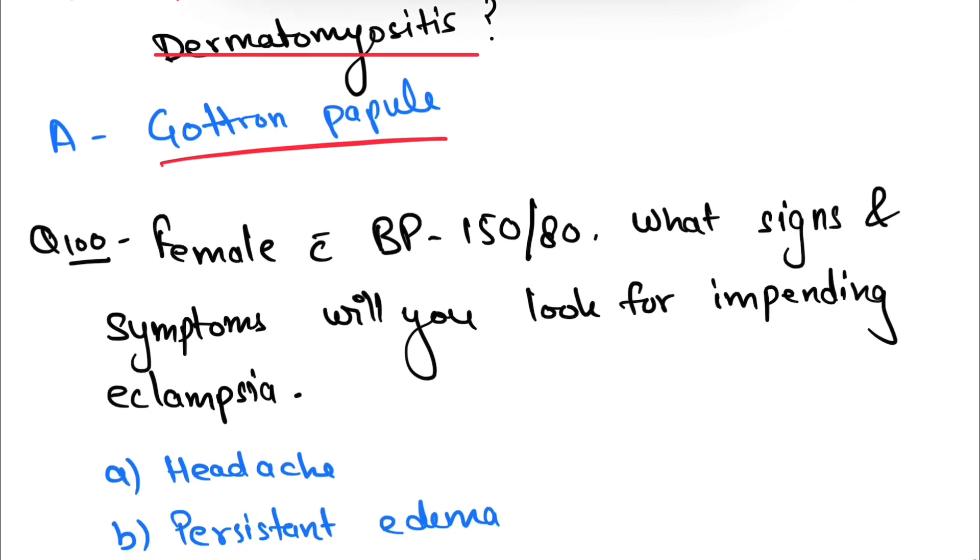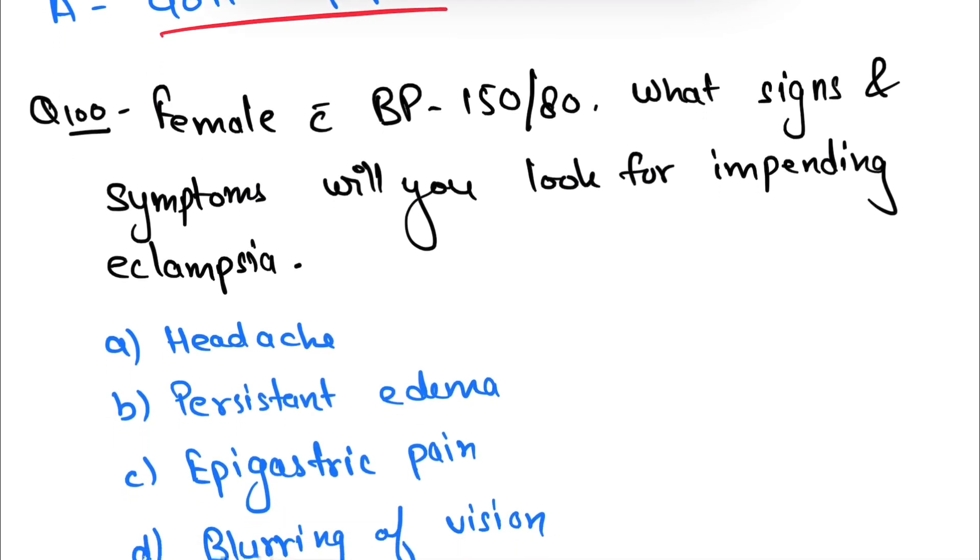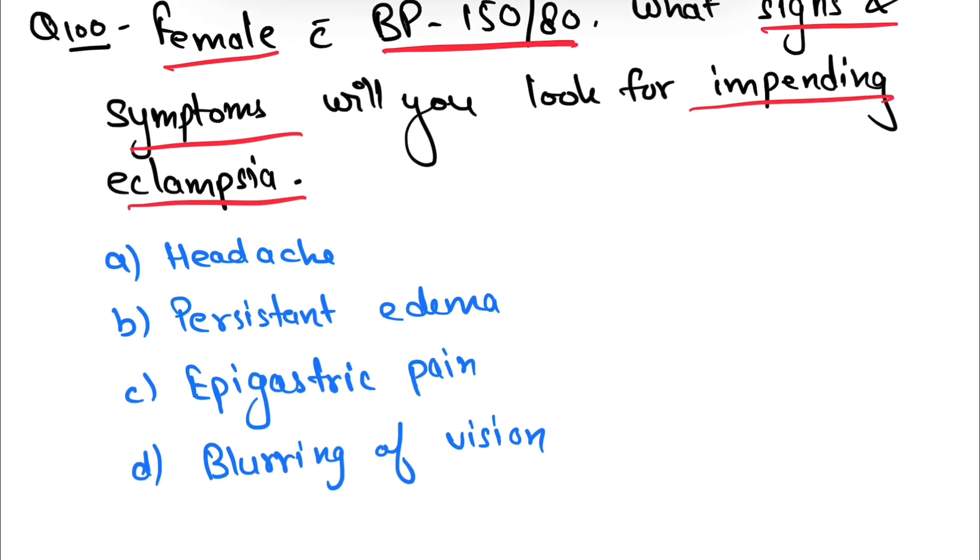Question number 100: female with BP 150 by 80, and they asked about the signs and symptoms which you have to look for in impending eclampsia. You have to look for headache, persistent edema, epigastric pain, and blurring of vision.